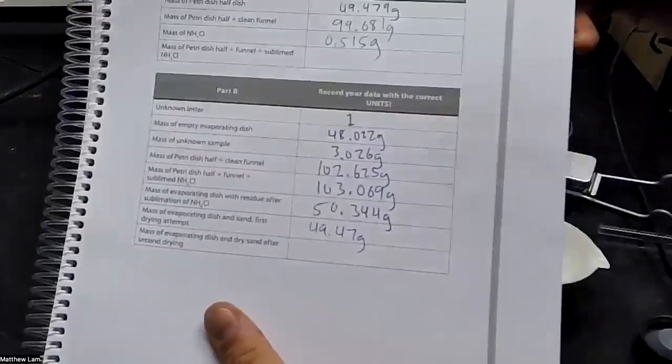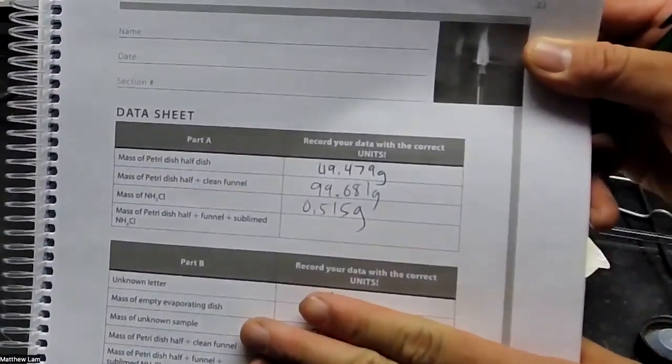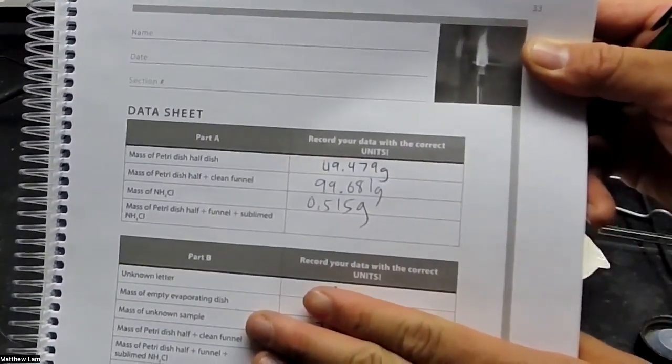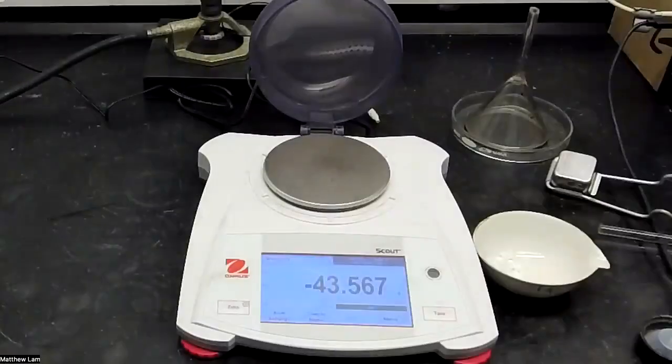So 0.515 grams. Before we start the experiment, we took all of our pre-data here. We measured the half dish, the half dish with a clean funnel, and the mass of sodium chloride.